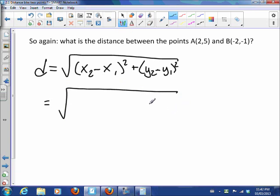Now, it doesn't matter which I pick to be x2 and y2 and which I pick to be x1 and y1 because I'm squaring them anyway, so the fact that they're negative doesn't matter. So let's say that B is point 2 and we'll say that A is point 1. So then the difference between the x coordinates is going to be negative 2 minus 2 squared plus the difference between the y coordinates is negative 1 minus 5 squared.